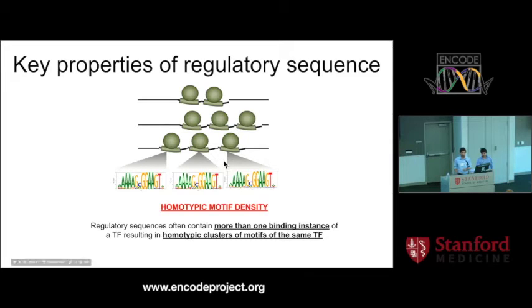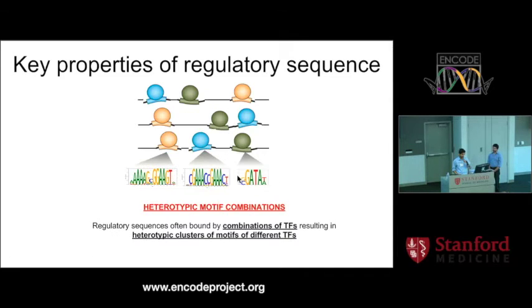However, it's not as simple as that usually. Often transcription factors bind in the form of homotypic clusters. That is, you have multiple instances of binding of the same TF. So the sequence will often show a density of hits of the same motif. Transcription factors also work with each other. And so often, regulatory DNA sequences will show combinations of transcription factors binding. So the sequence will contain multiple instances of different types of motifs. These would be referred to as heterotypic motif combinations.